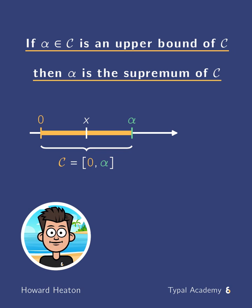And for alpha to be the supremum of C, we must have that it is an upper bound, which is given. And we need to have it be the case that for any beta less than alpha, that beta is not an upper bound.